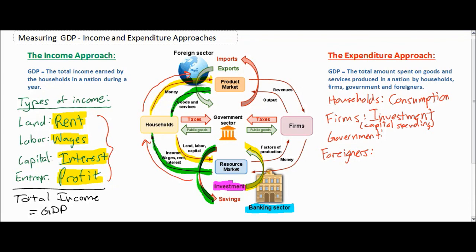The next stakeholders who spend money in a nation's economy are the government — we call this government spending. Governments spend money on education such as public schools, infrastructure such as roads and bridges, healthcare for the elderly, unemployed, or poor households. Any time a government provides public goods to the nation's firms or households, this is considered government spending and is an injection into the circular flow. The government gets this money from taxes paid by households and firms, so taxes are considered a leakage from the circular flow, whereas government spending is considered an injection.